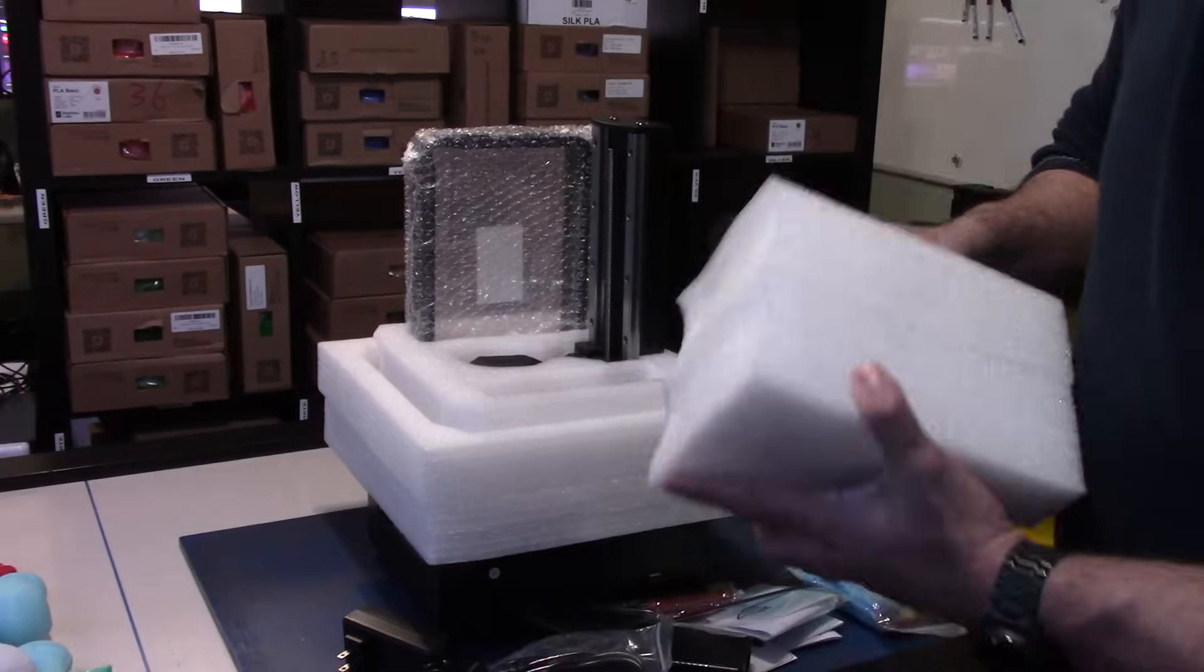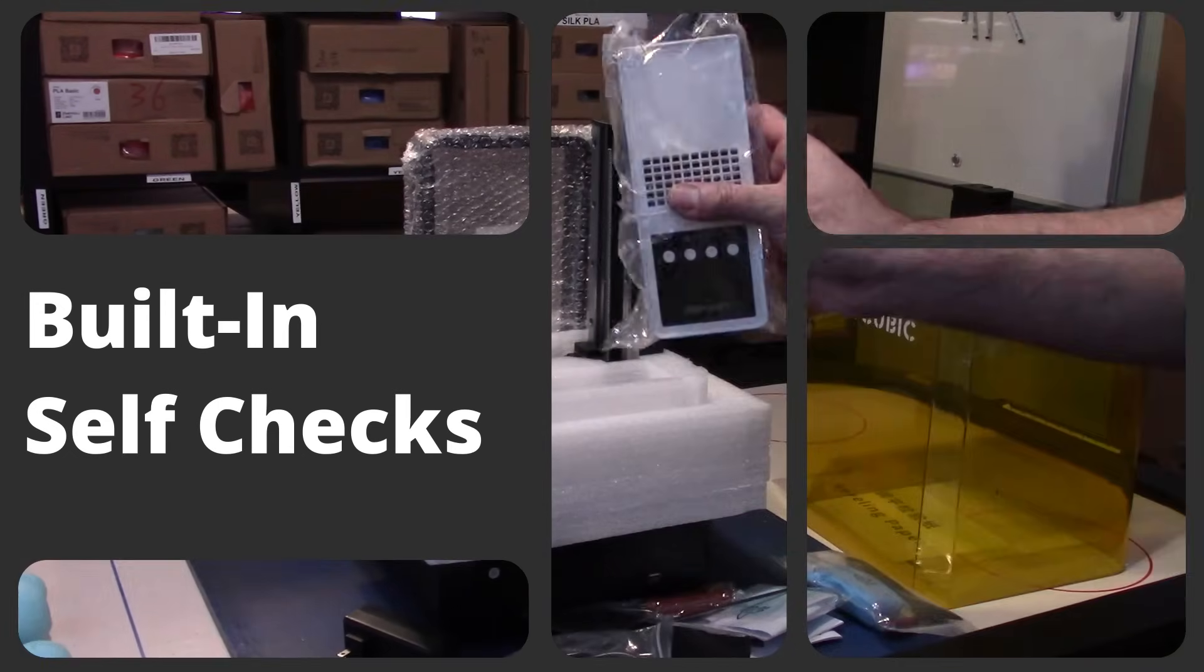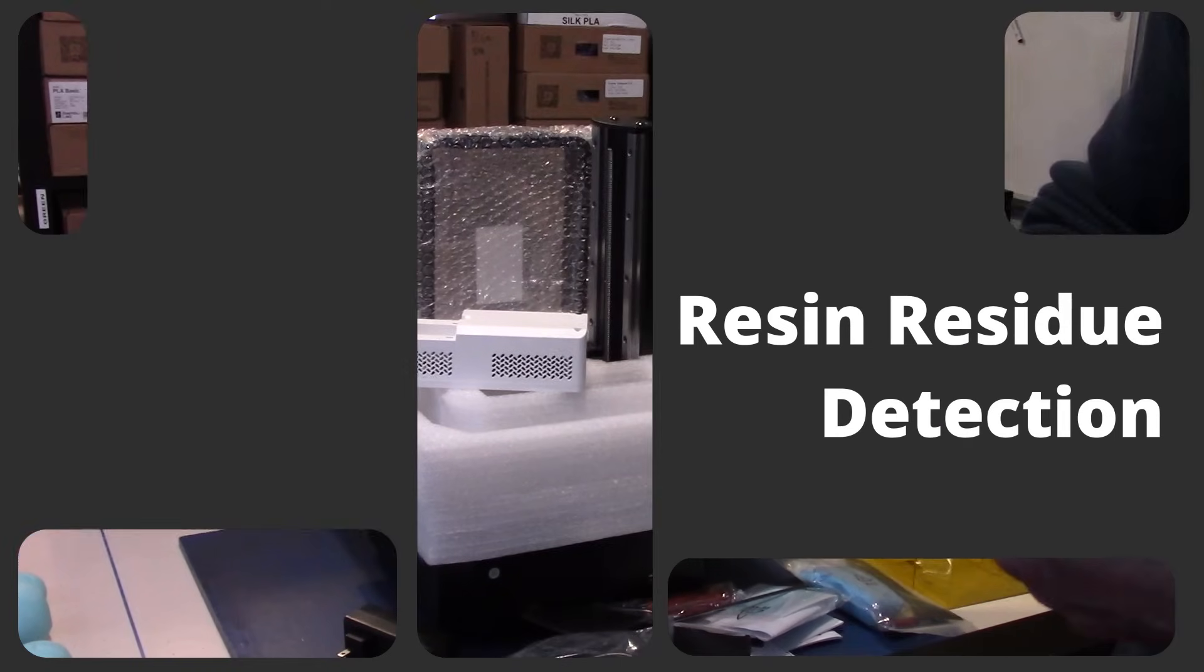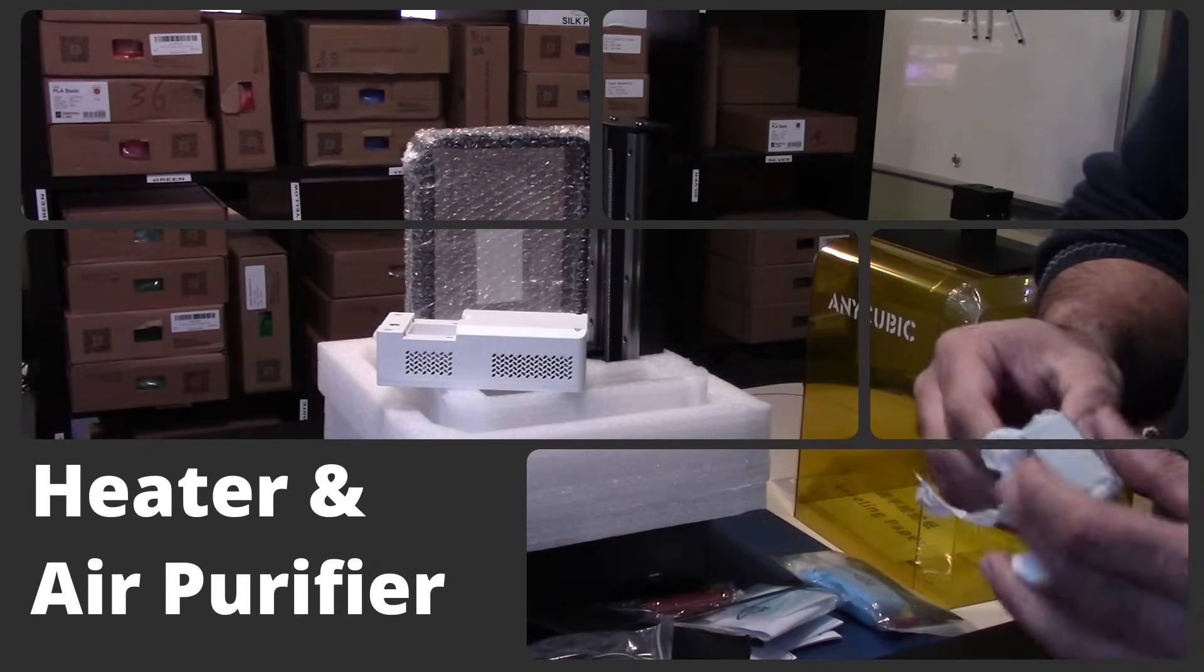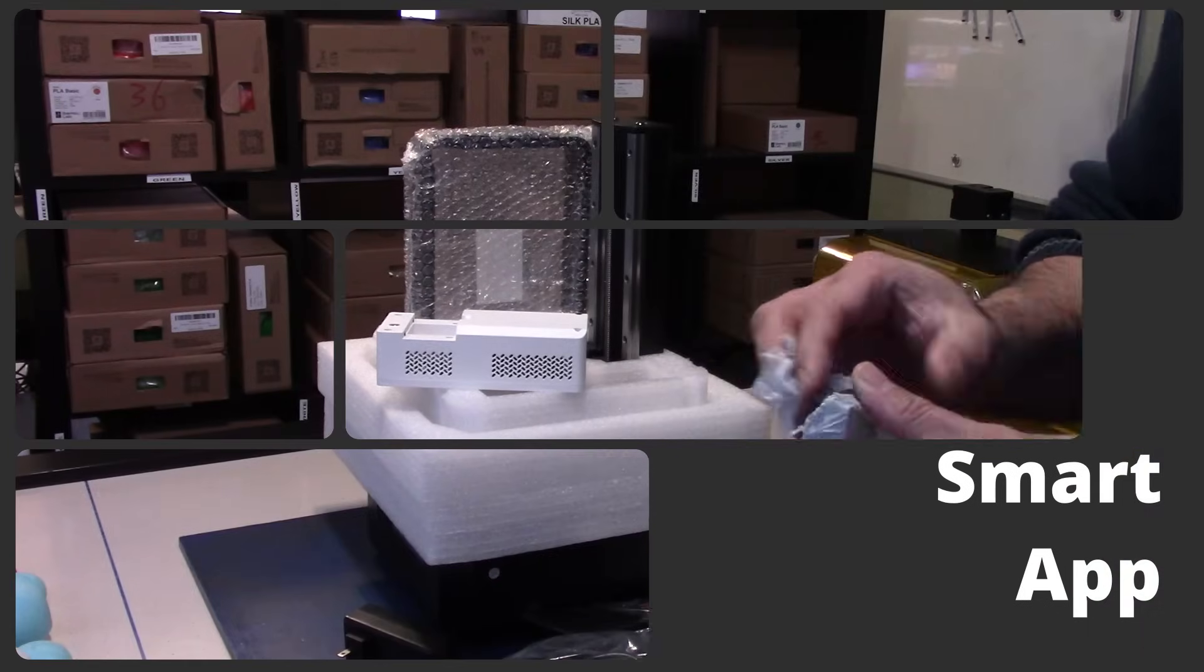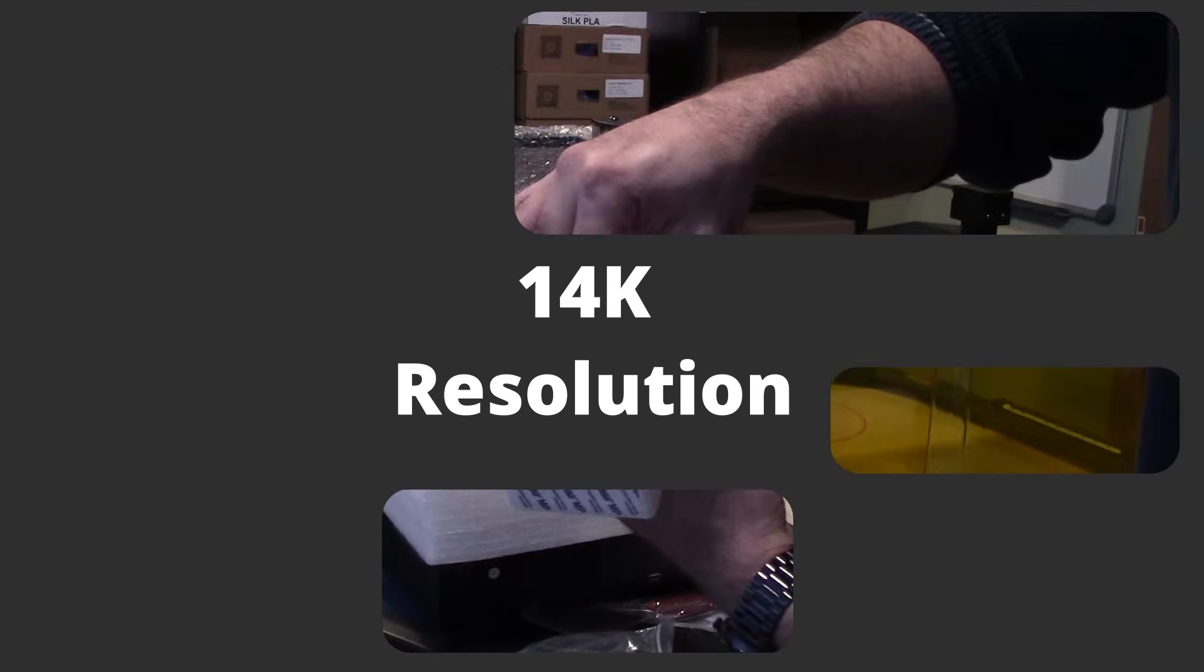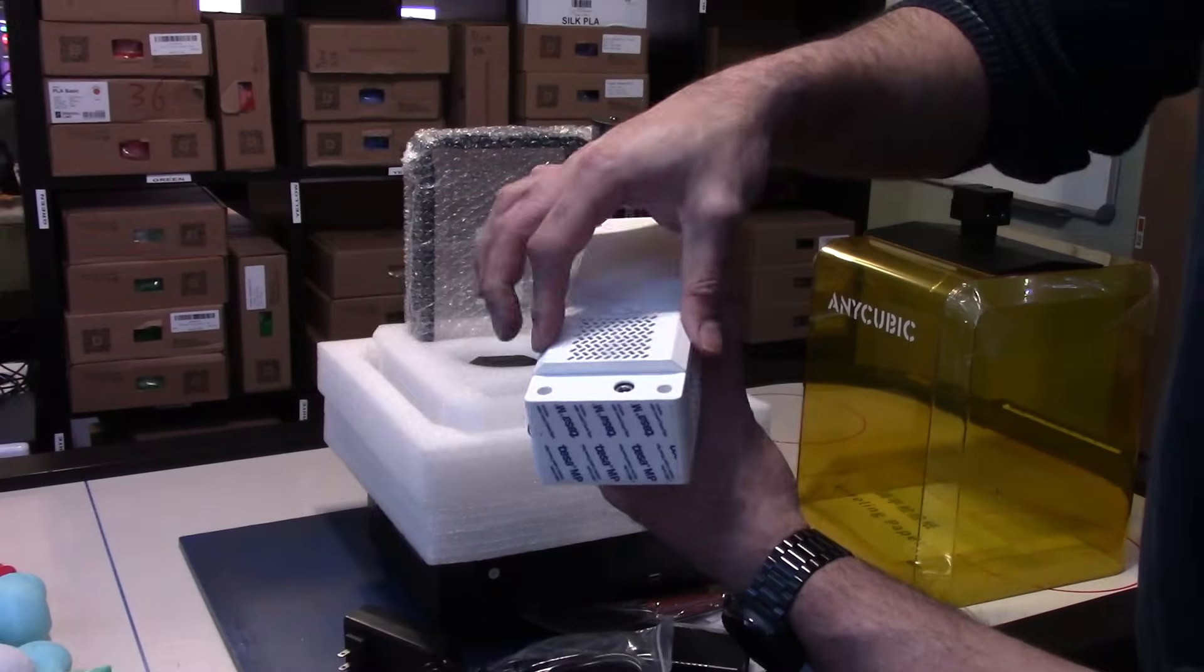High-speed resin printing at 105mm per hour. It has smart monitoring, built-in self-checks, resin detection. This function already saved me a few times. Intelligent release, resin residue detection, a heater and air purifier, smart app, large printing volume, and most importantly, the first 14K resolution resin printer.